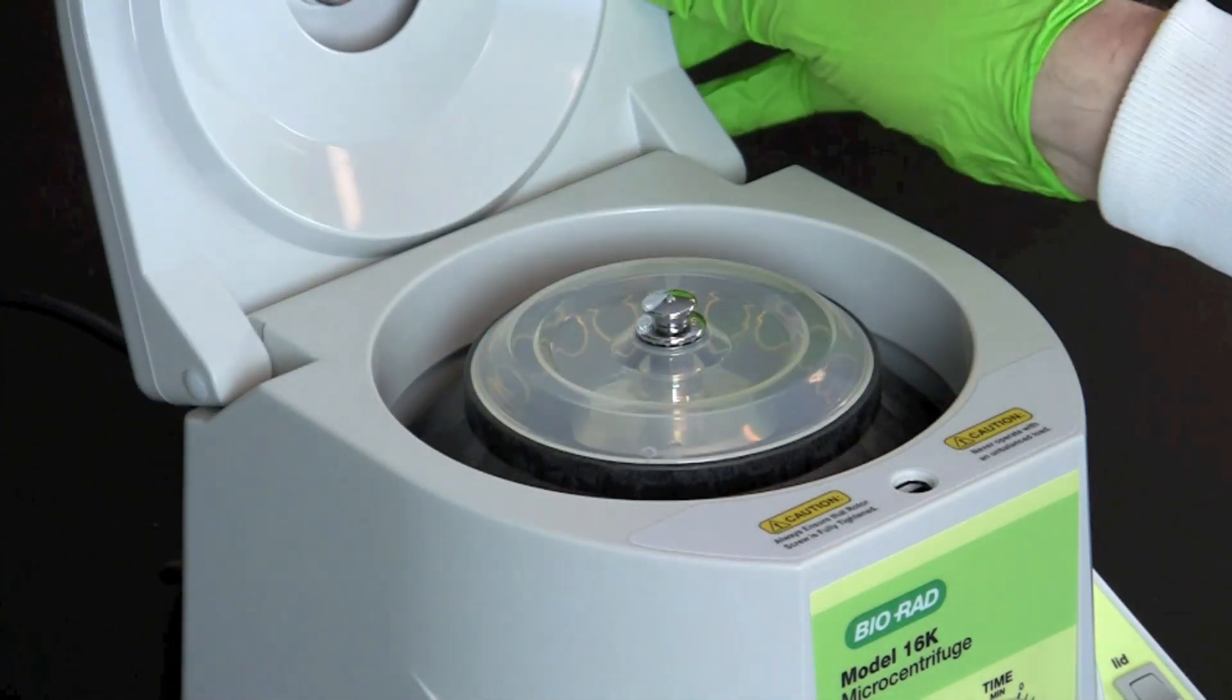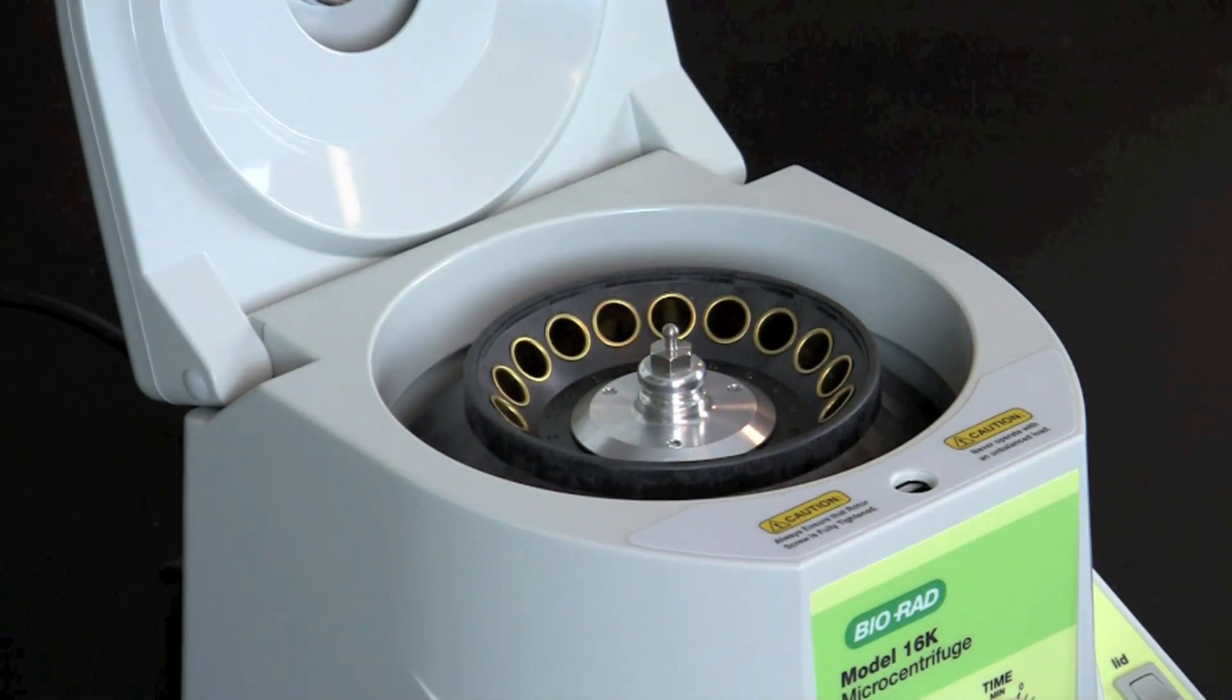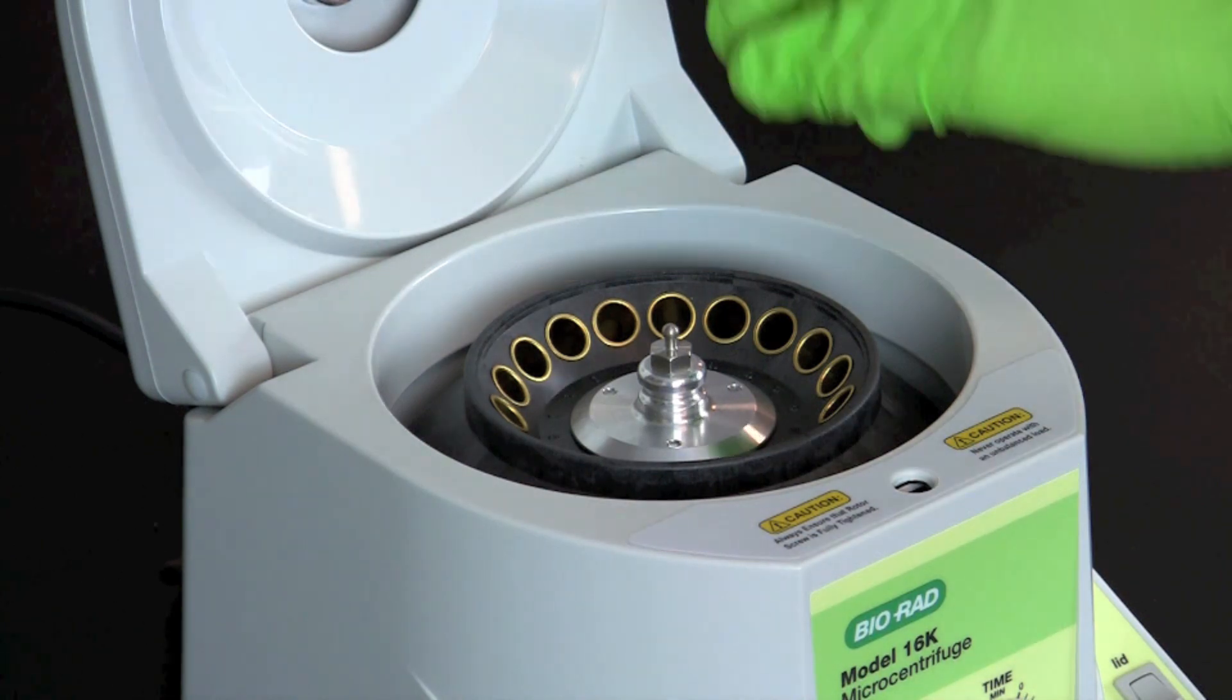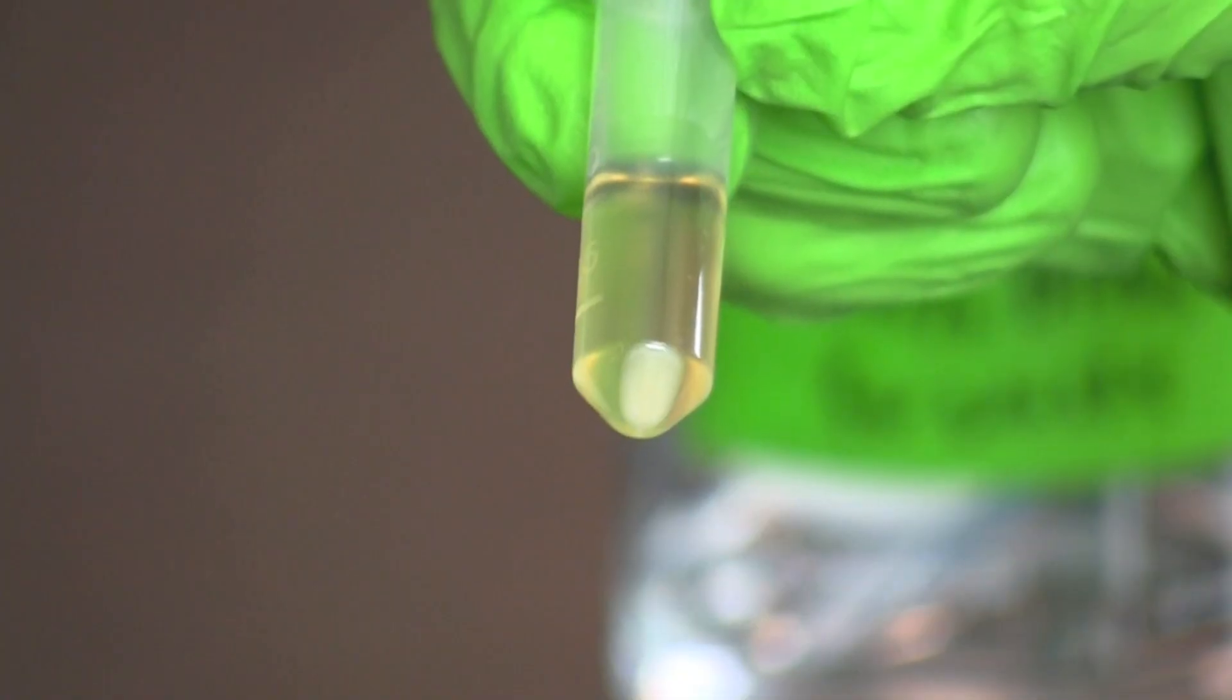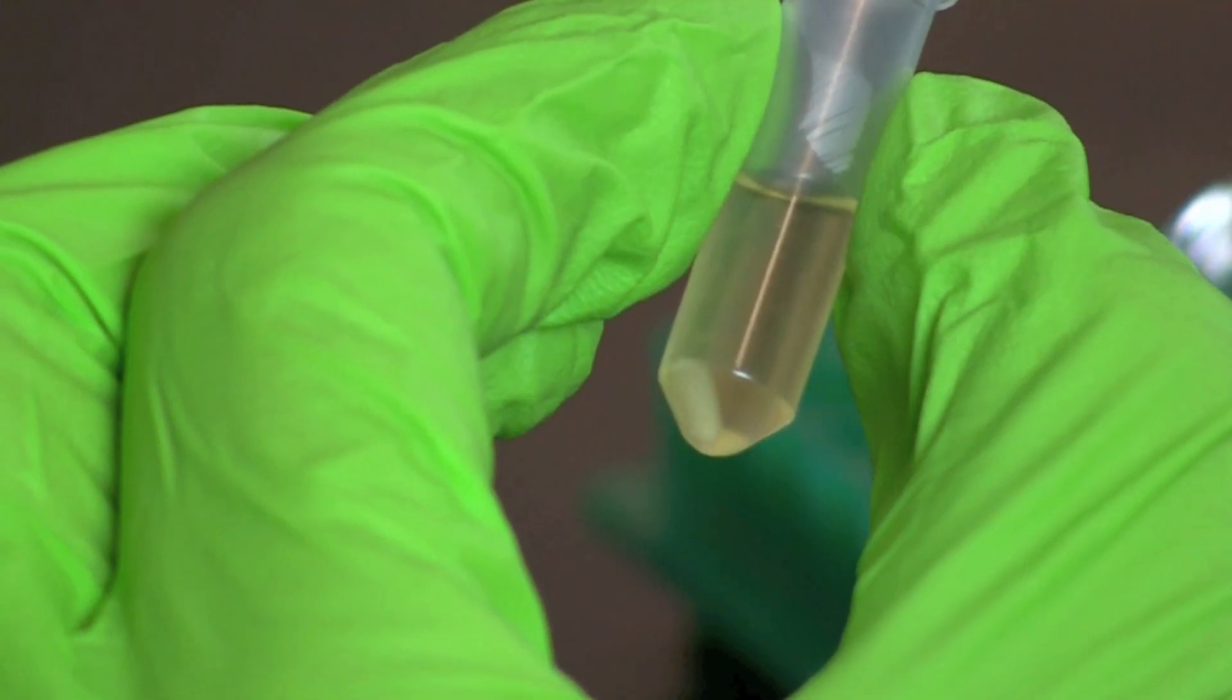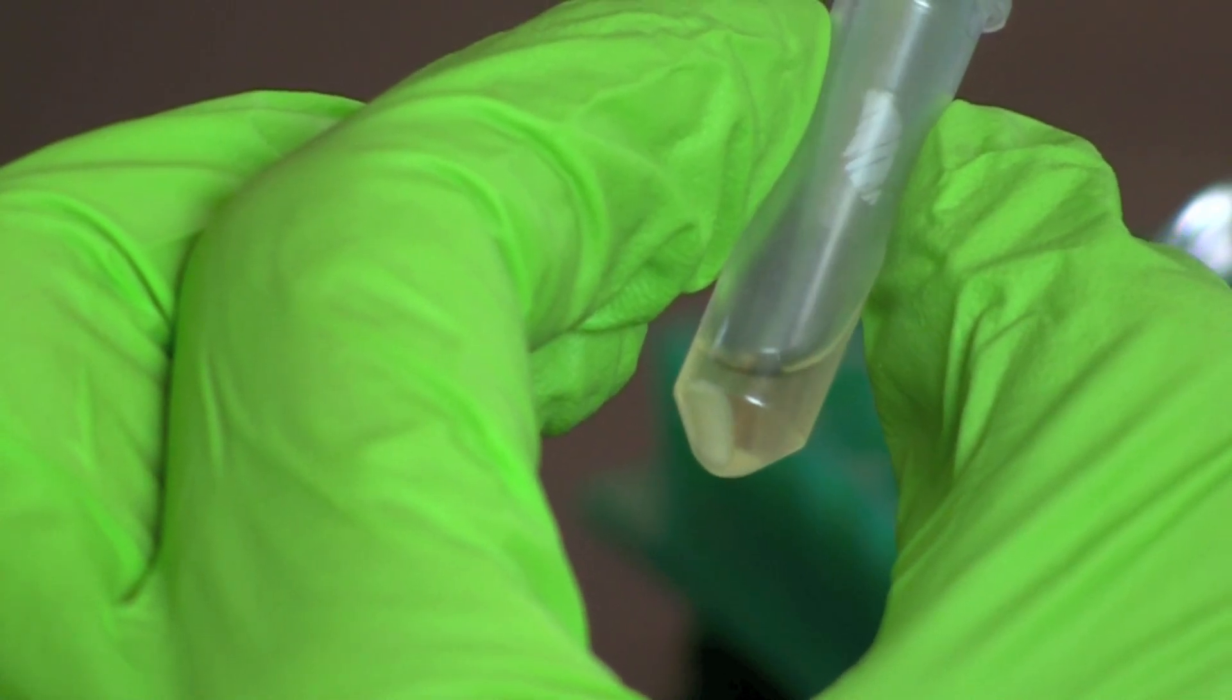When the microcentrifuge is stopped, remove the microtubes. Locate the bacterial pellet. It should be below the hinge of the tube. Remove the liquid or supernatant from each tube using a micropipet or a vacuum source. Avoid touching the pellet.